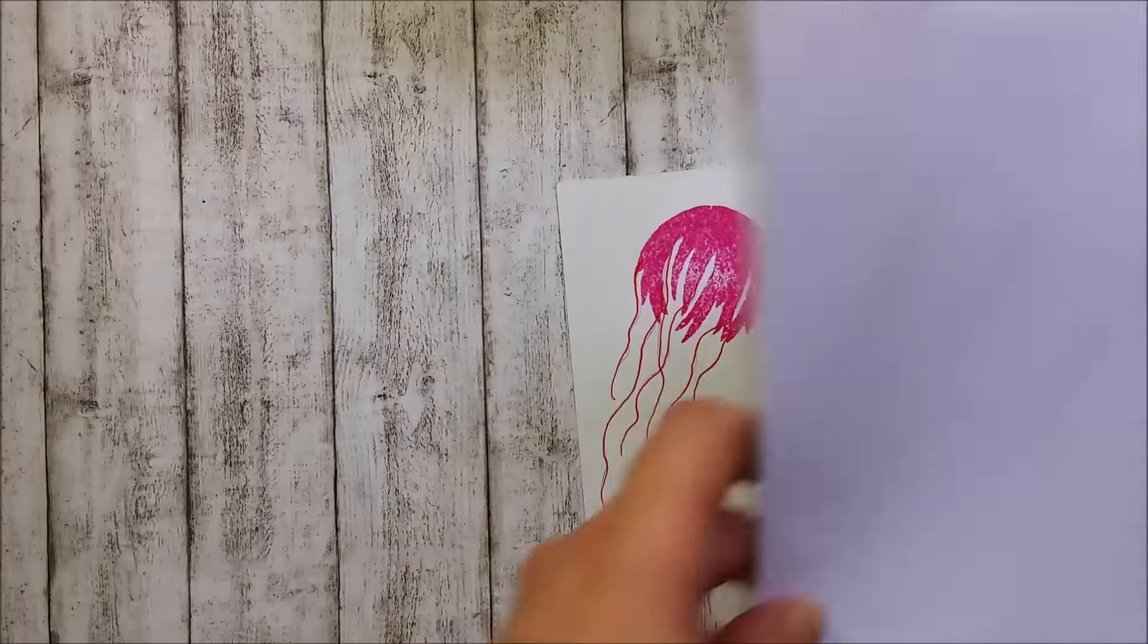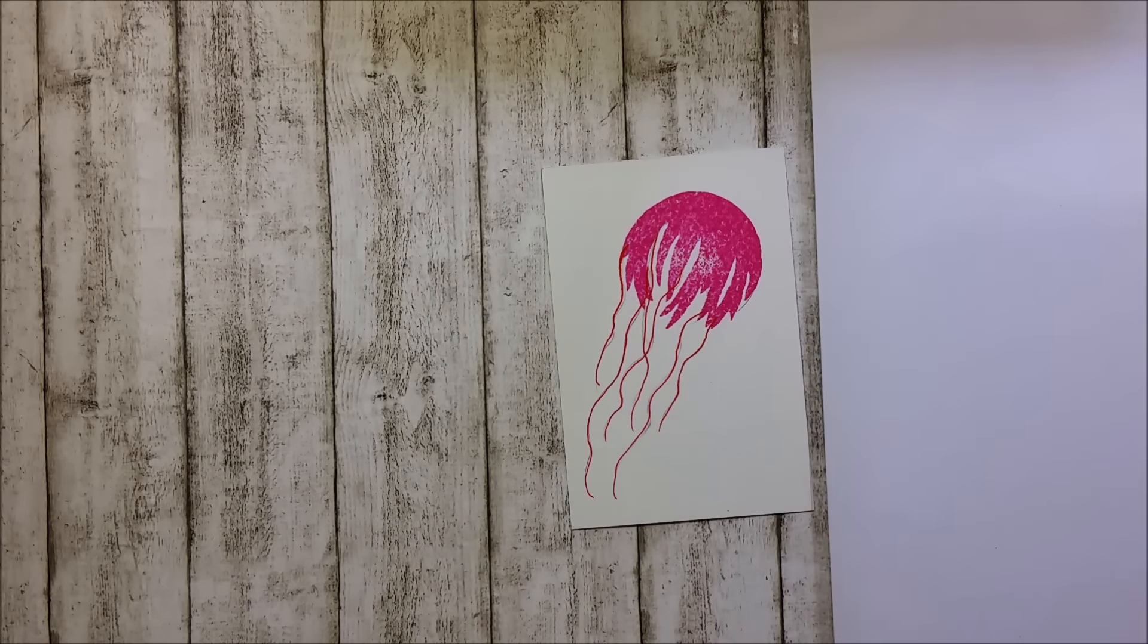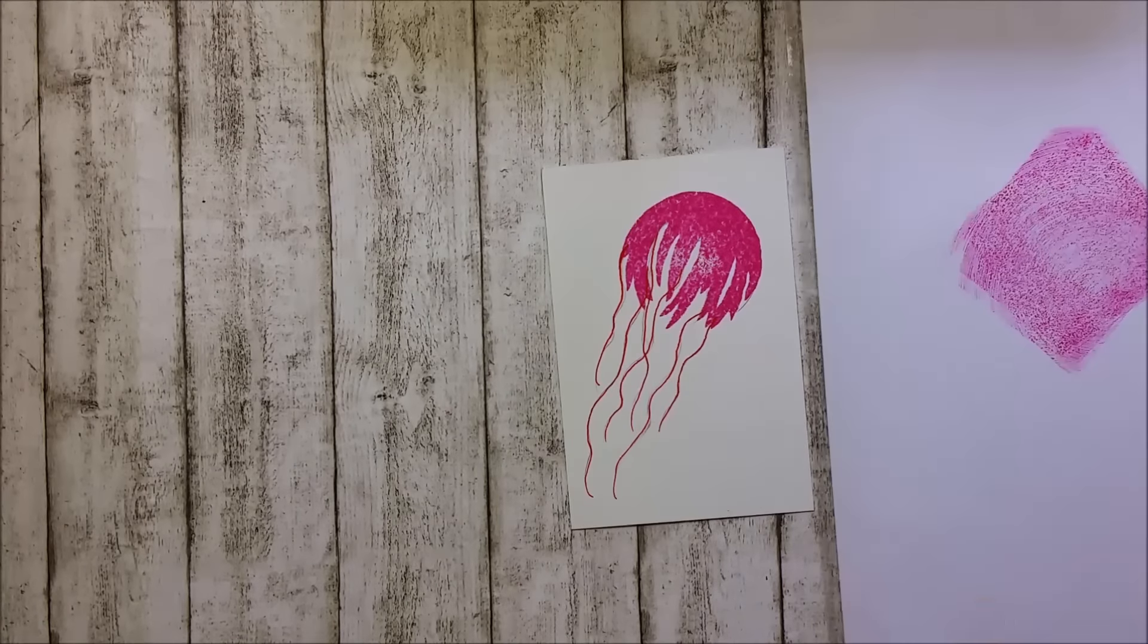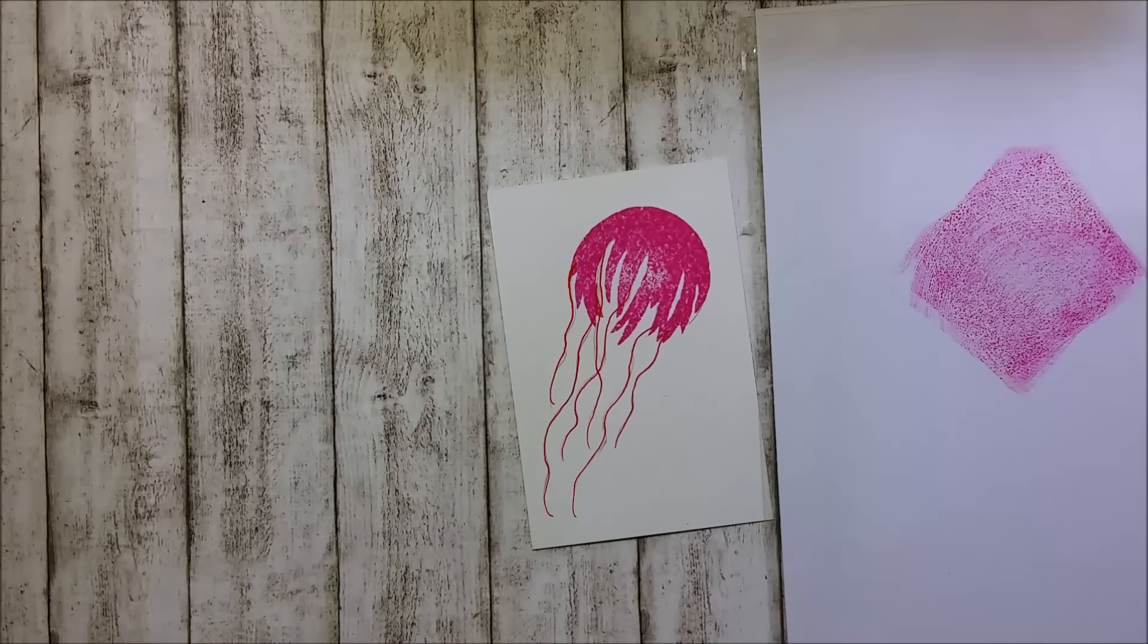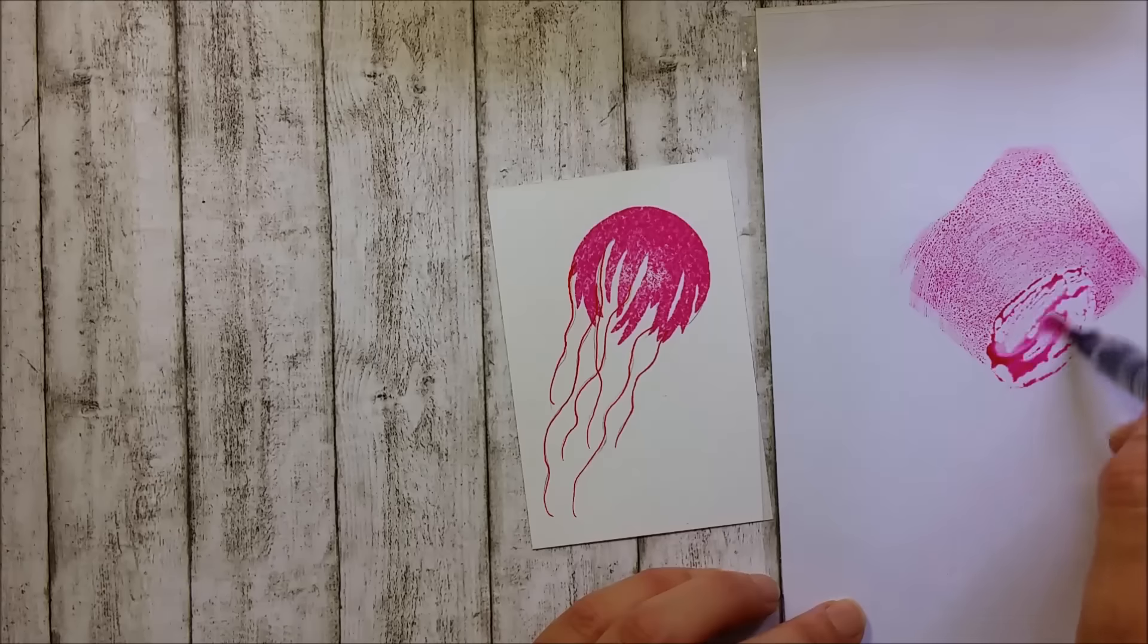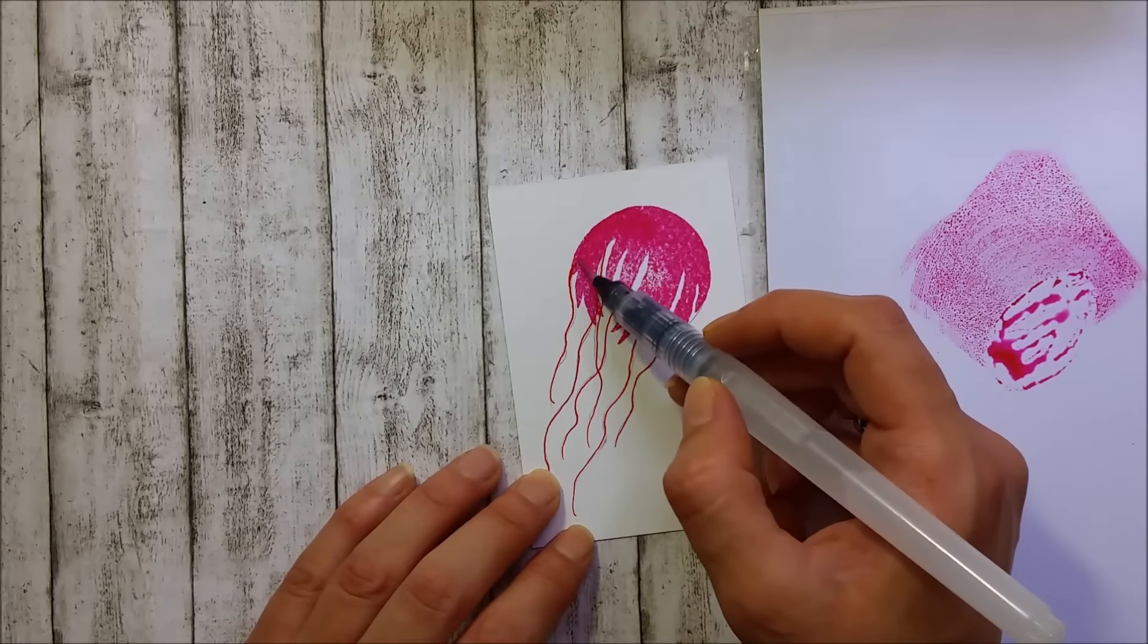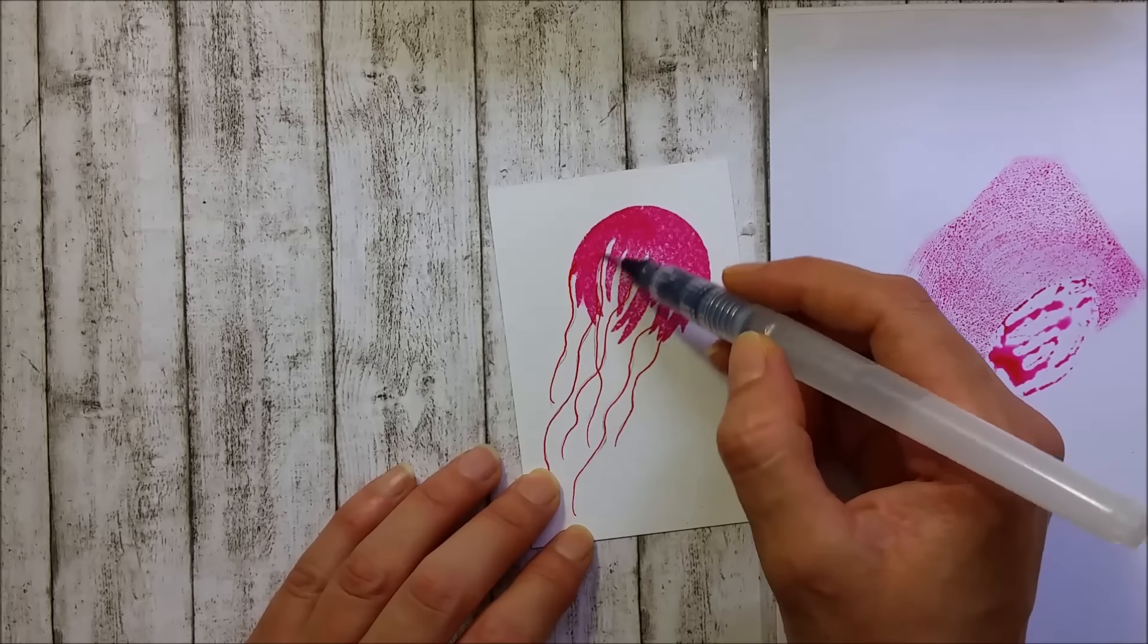And because this is watercolor paper, I will add some more color. I'm smushing a bit of this picked raspberry, and with my water brush I'm just gonna pick a bit of this color and cover my jellyfish here.